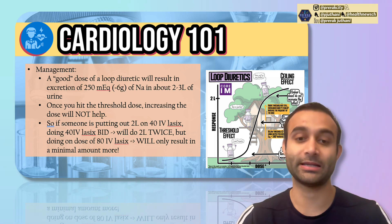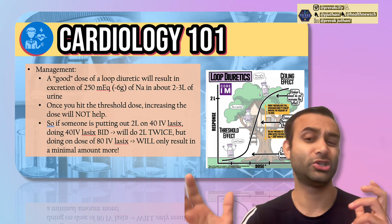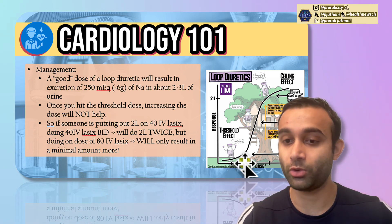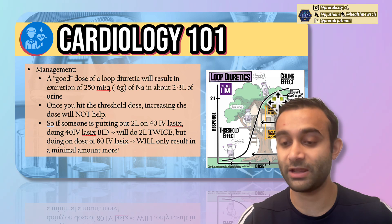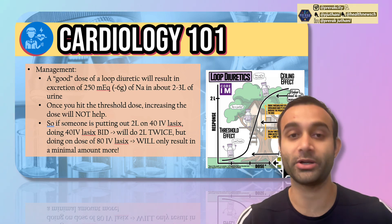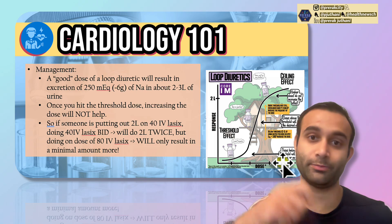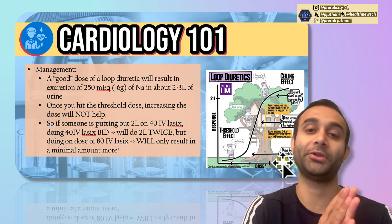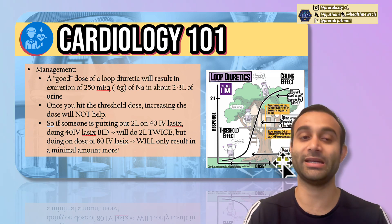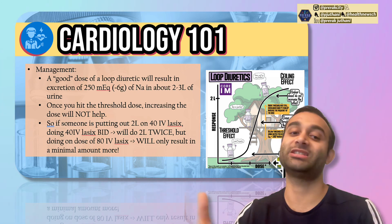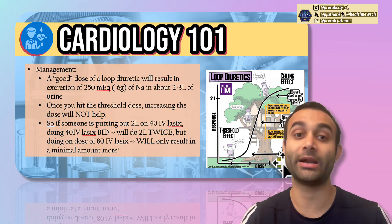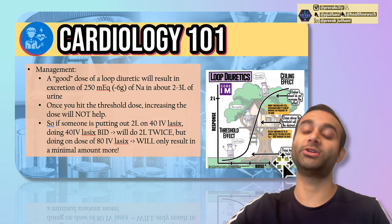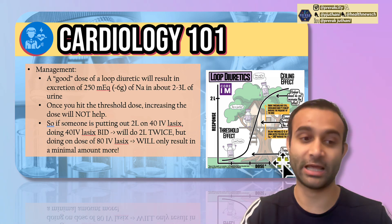A good dose of a diuretic usually means the patient puts out around 2 liters of urine. Once you're hitting 2 liters, increasing the dose further won't yield much more output — instead, increase the frequency of dosing. For example, if 80 mg IV Lasix produces 2 liters, don't go up to 160 mg; instead, give 80 mg twice daily, then three times daily. Dosing more frequently once you've hit that threshold effect is the right approach.